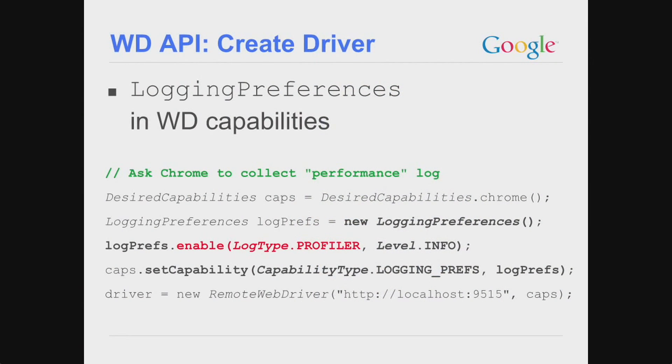How does that work in WebDriver? There is a notion of capabilities that you pass when you create a driver instance — essentially name-value pairs. In the latest release of ChromeDriver, there is a profiler log type that you can enable when creating the WebDriver instance. You can inject it as transparently to the test as you like — in the setup method, through a WebDriver builder abstraction, or even by proxying the WebDriver wire protocol.